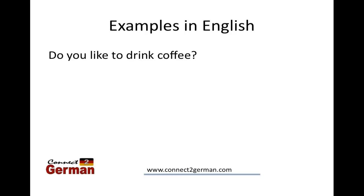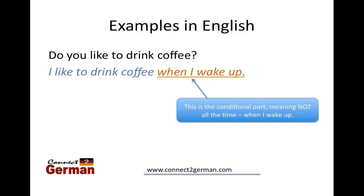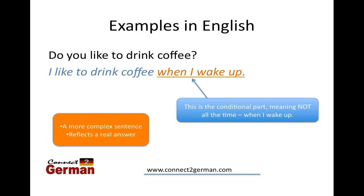So first, some examples in English. You have the question: do you like to drink coffee? And you might answer it with something like: I like to drink coffee when I wake up. So maybe not all the time, but just when you wake up. This condition is really just like our WENN clause — 'when I wake up.' Just like in English, the WENN clause helps you to build a more complex sentence and give a more realistic answer. Sometimes there isn't a straight yes or no. Sometimes it's linked to something — you need a condition — and this WENN clause helps you to do that.